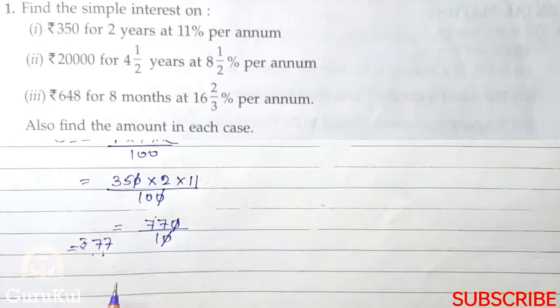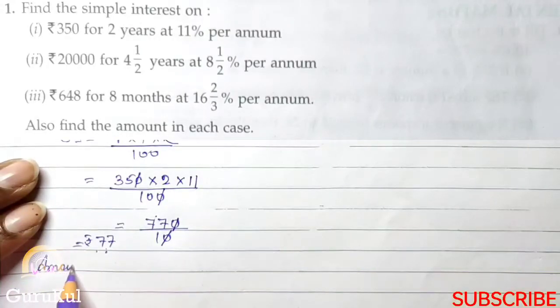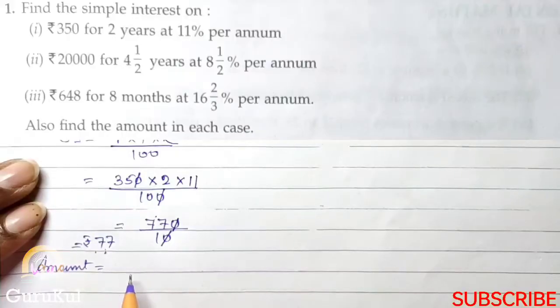At the end of the question, they asked, also find the amount in each case. So, to find out amount, the formula is principle plus SI, which is interest.